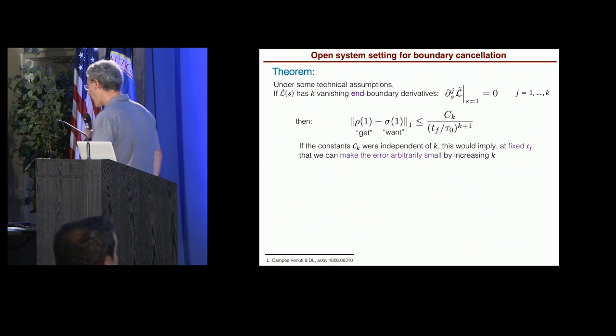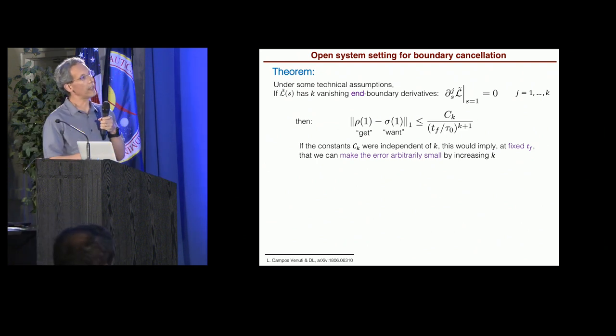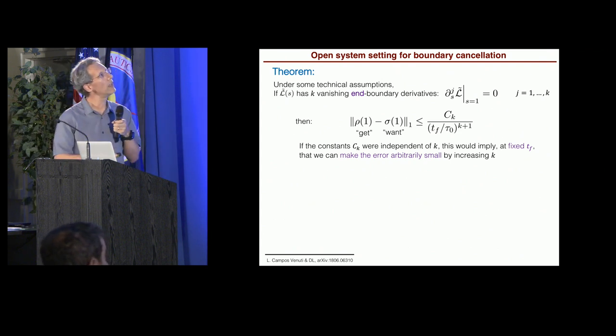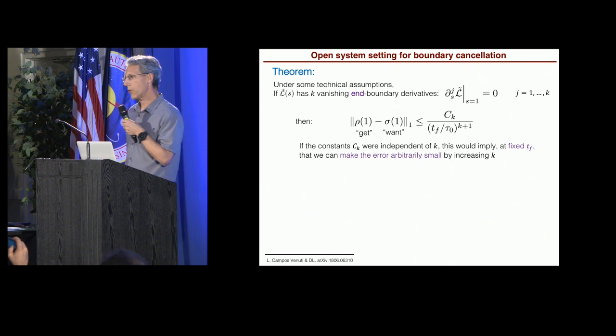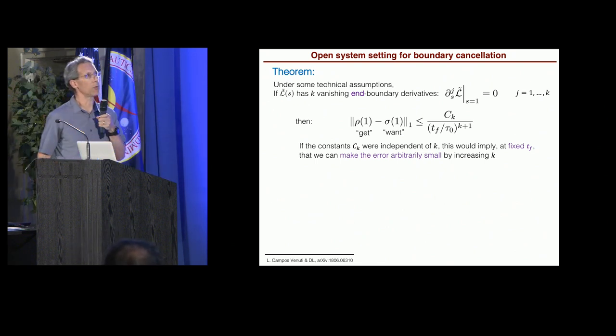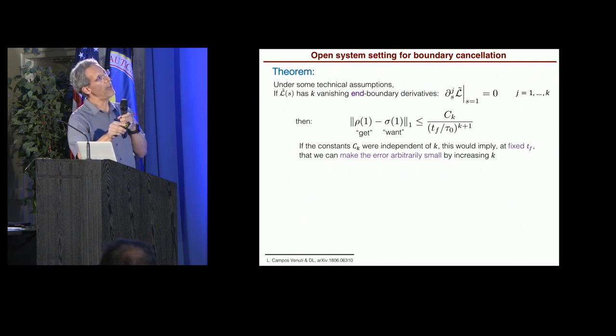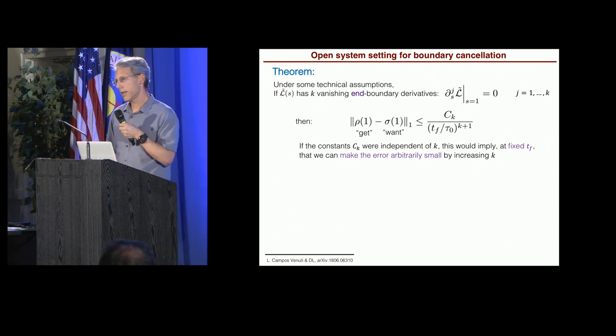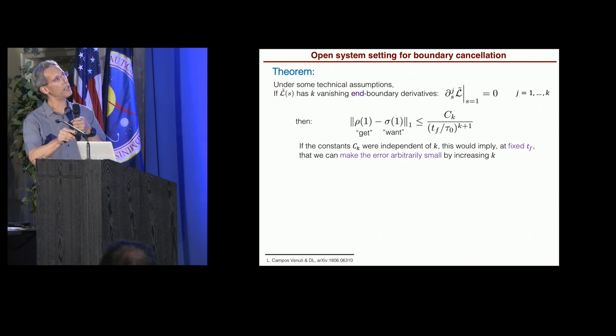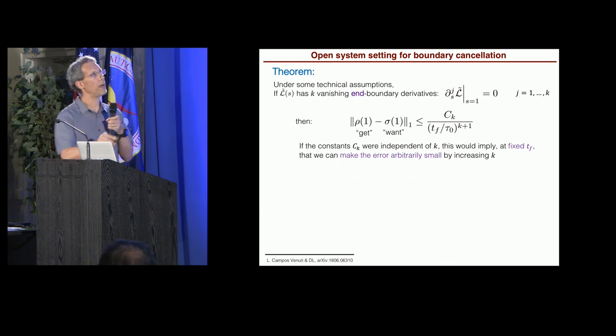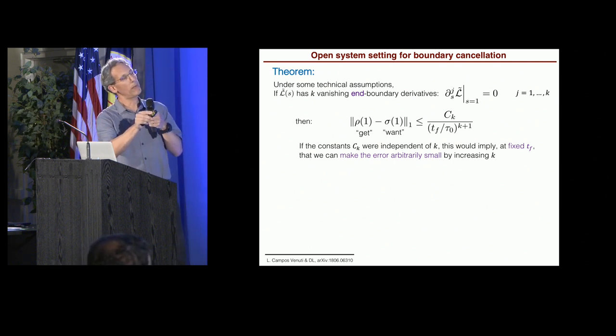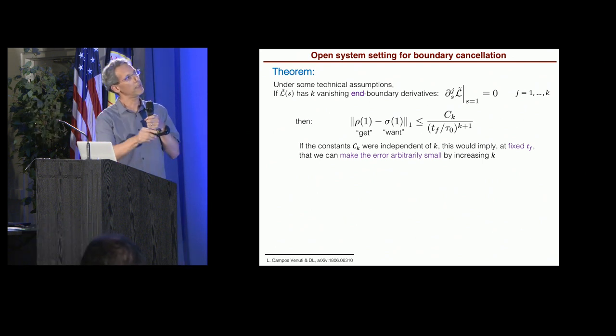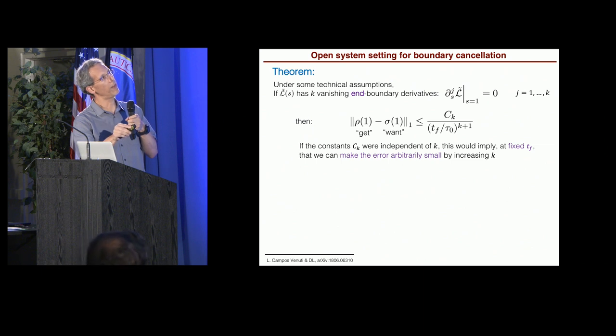Let's assume that the Liouvillian has K vanishing only end boundary conditions. We don't need the initial boundary condition anymore. If it has K vanishing end boundary conditions, boundary derivatives, then the error between what you get and what you want is upper bounded by some constant divided by the evolution time to the power of K plus 1. Okay. So this means that we can make this error arbitrarily small, assuming that we implement this, enforce this end boundary condition, and we evolve for, you know, time Tf.